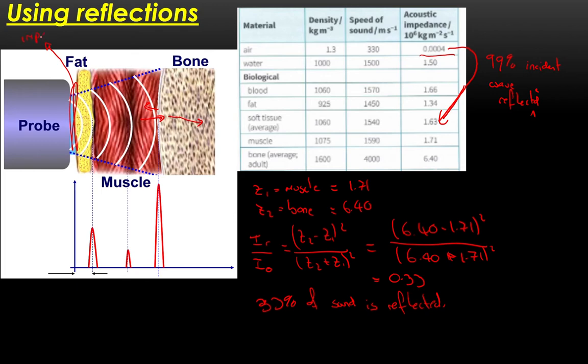So what we do instead is we put a layer of gel on the patient's skin and this is called impedance matching. So what we do is we place this ultrasound gel or jelly on the patient's skin and it has a very similar acoustic impedance to skin and tissue so the idea is we get very little reflection there and that means that we have enough intensity traveling through the patient to get a signal.